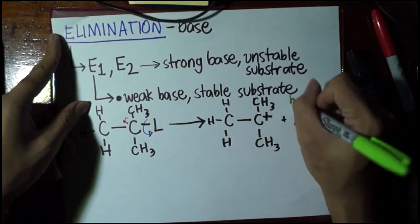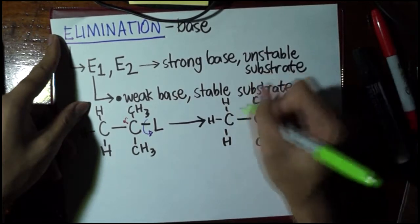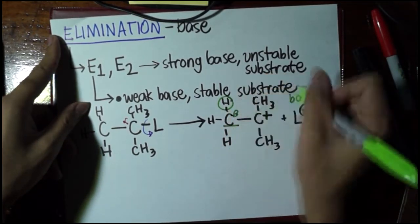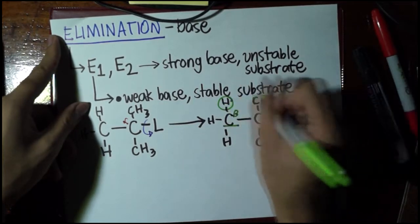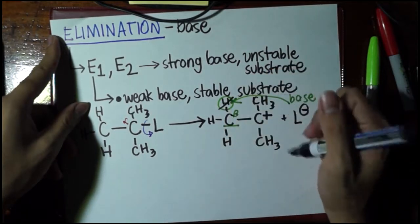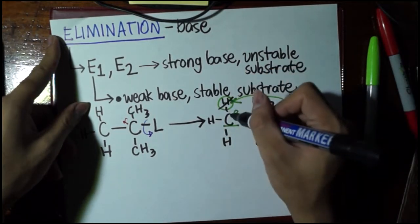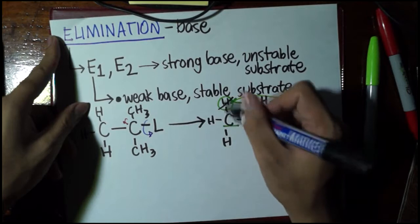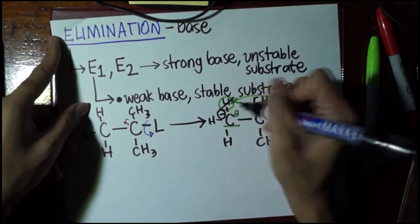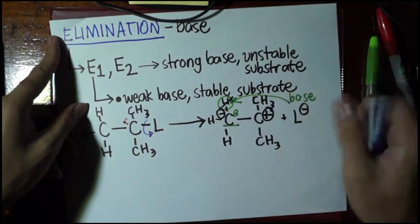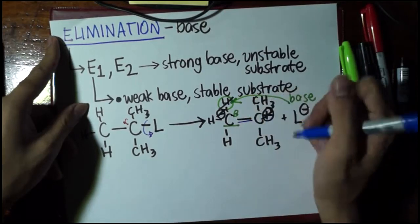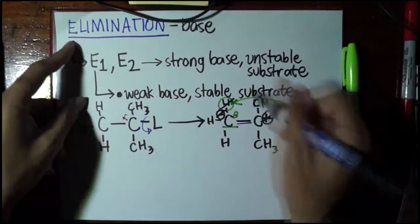Now, this is the time where the base can already attack the beta hydrogen. This is the beta carbon, this is a beta hydrogen. The base swipes away the hydrogen, so the hydrogen also goes away. What happens to this one, between hydrogen and carbon, carbon wins the battle for electrons, it becomes negative. We have here a negative charge, a positive charge. In order to cancel that out, we now form a double bond.